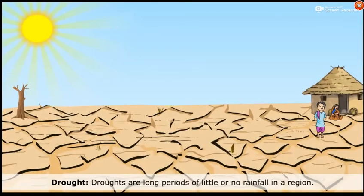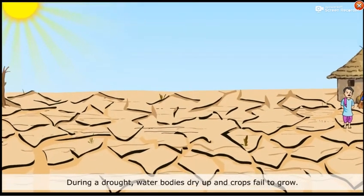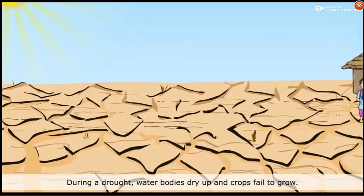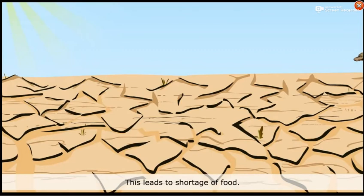Drought. Droughts are long periods of little or no rainfall in a region. During a drought, water bodies dry up and crops fail to grow. This leads to a shortage of food, as the hazard is a result of lack of water.